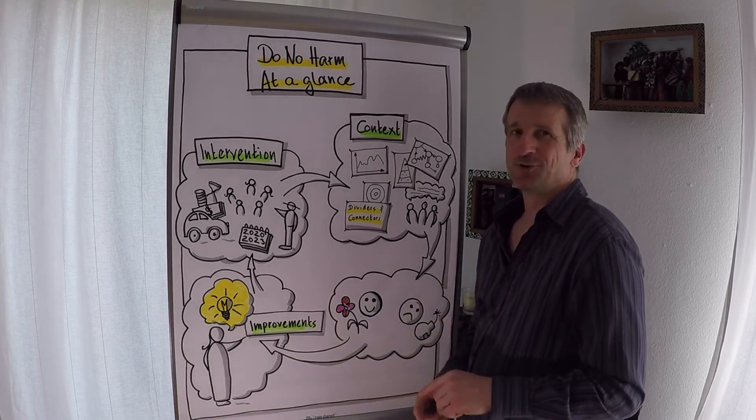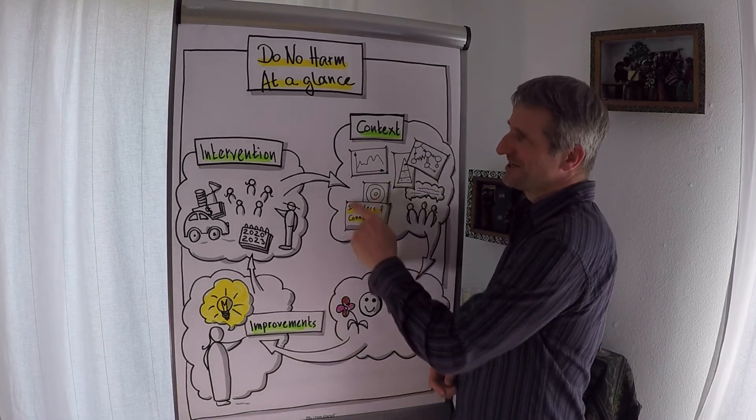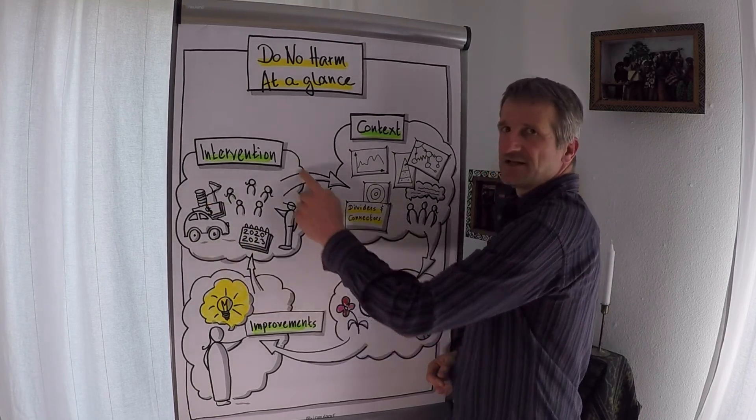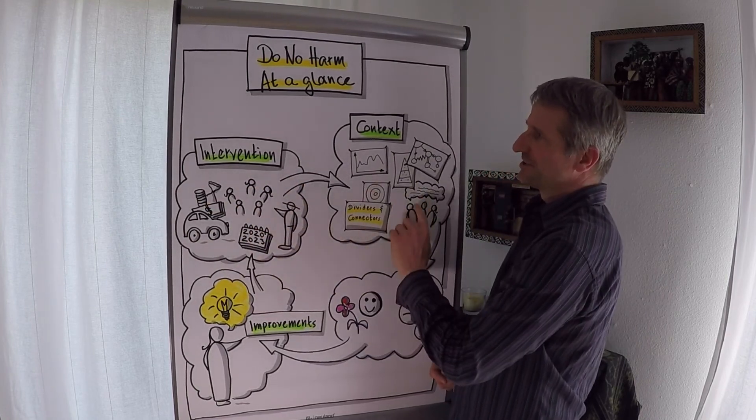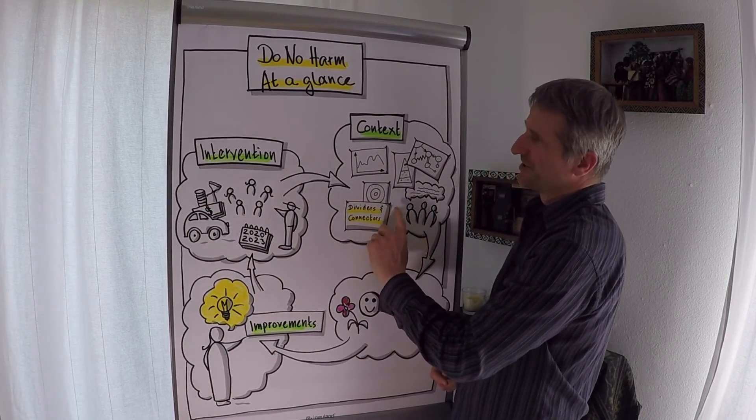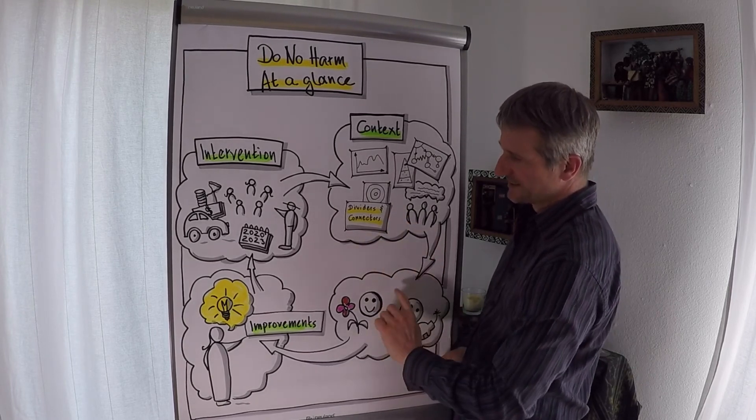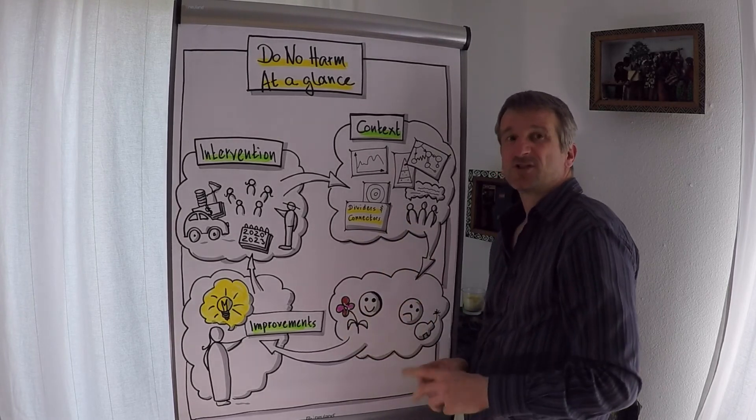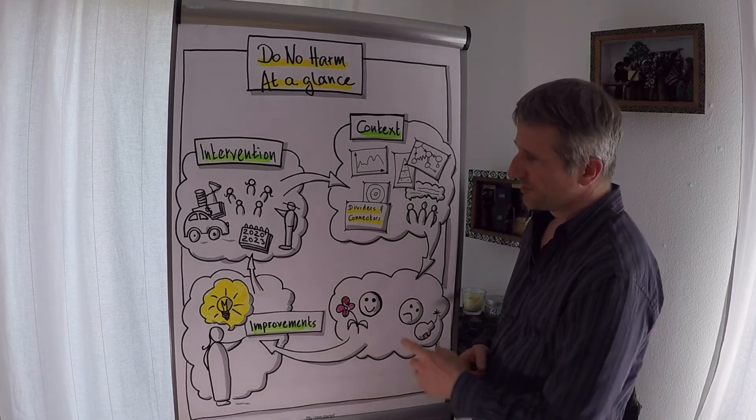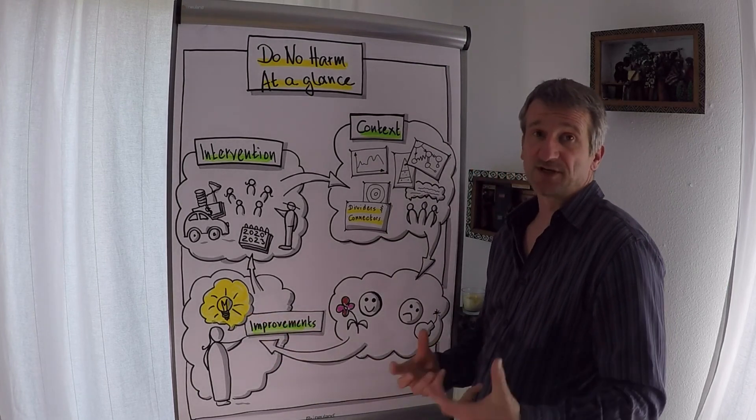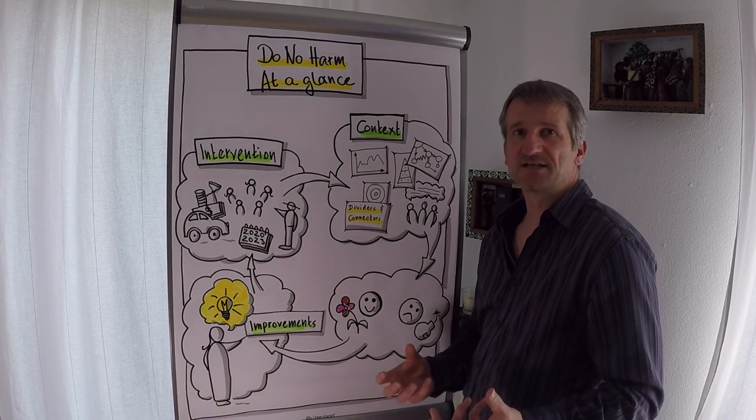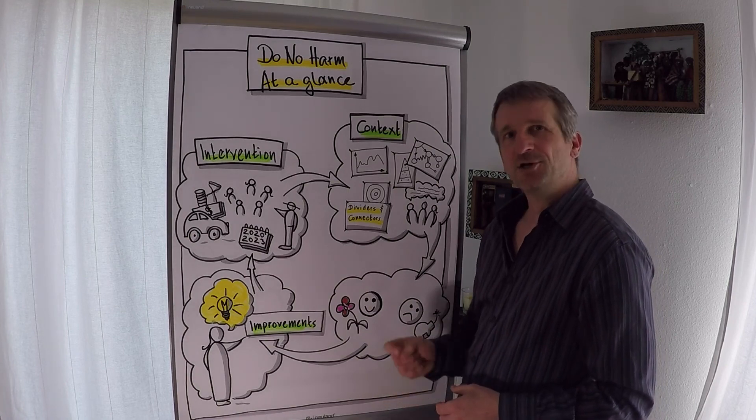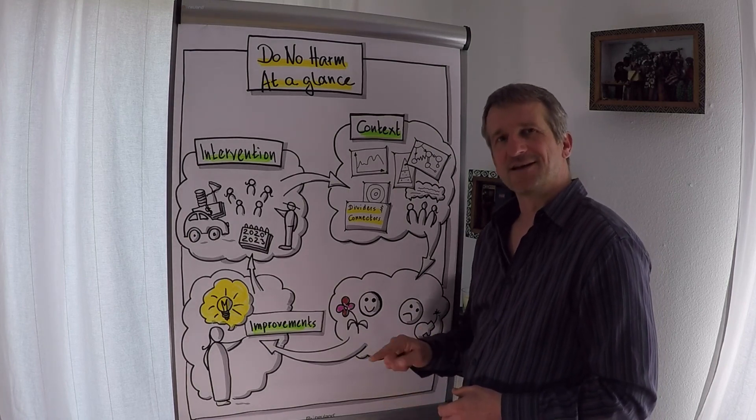So this is what I would call Do No Harm in a nutshell: understanding the context, unpacking the intervention, seeing how the intervention interacts with the dynamics in the context, seeing where that might cause harm—that's where we get the name from—and then obviously coming up with better ideas, better alternatives, additional better programming options. Good, more in detail now.